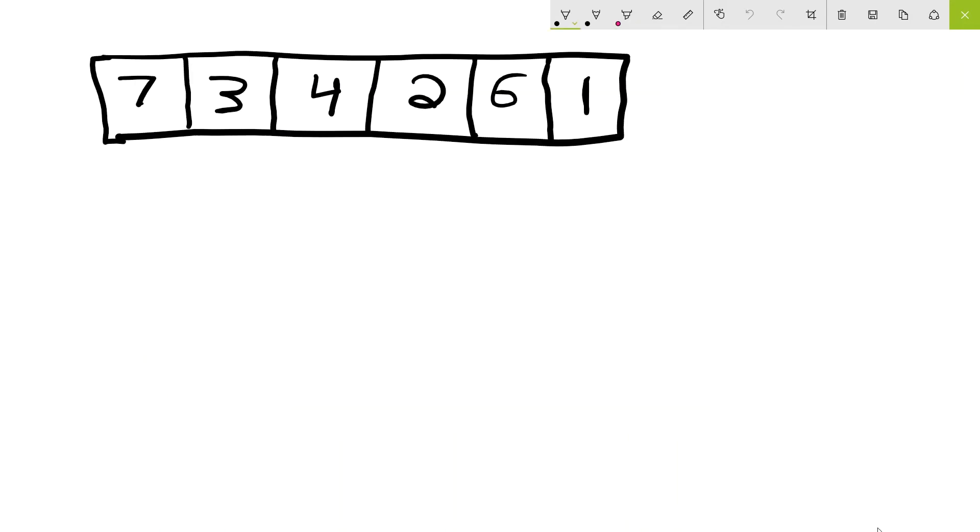Bubble sort is a popular sorting algorithm, but it is not one of the most efficient ones. It works by going through a series of iterations, and on each iteration through an array, so in this case we have an array of length 6, we look at adjacent pairs of elements. So I'm going to just label the indexes real quick.